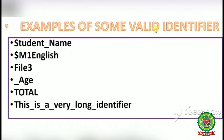Now see examples of valid identifiers. Number 1: 'student_name' — you can use an underscore in between, like 'roll_num'. Number 2: '$dollar' — an identifier can start with a dollar sign and may consist of digits or uppercase characters. Number 3: 'File3' — a digit can appear at the end but not at the start.